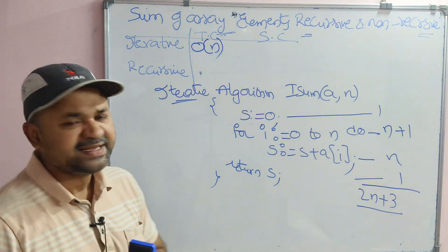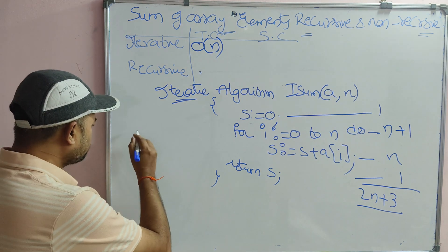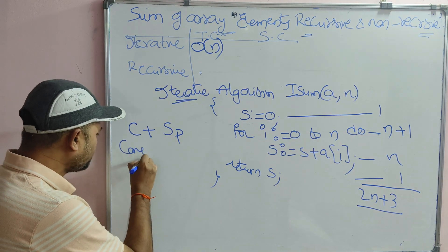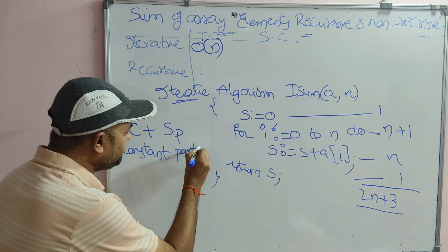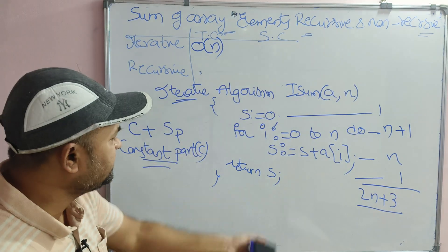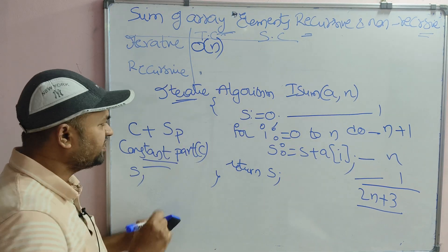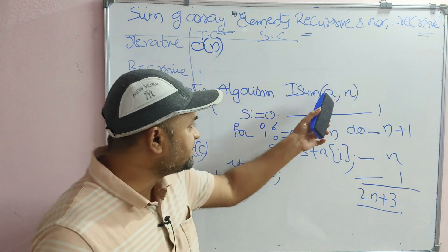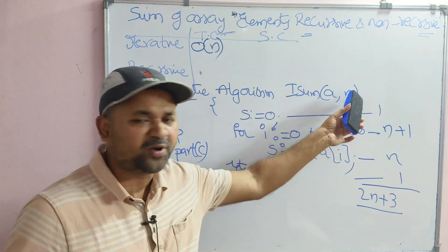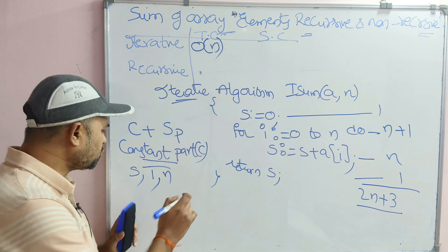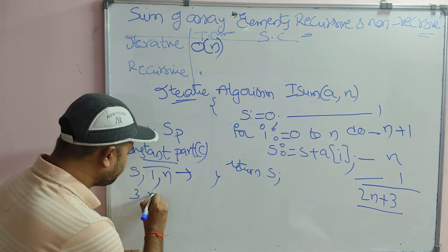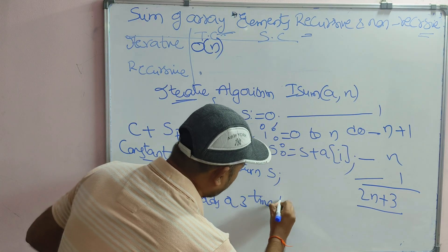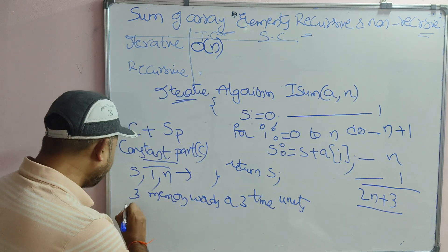Now let us focus on space complexity. The space complexity formula is the constant part plus the variable part. The constant part does not depend upon any other variables. Looking at this algorithm: S is not depending on any other variable, I is not depending on any other variable, and N is not depending on any other variable. In order to store these 3 variables, we require 3 memory units.